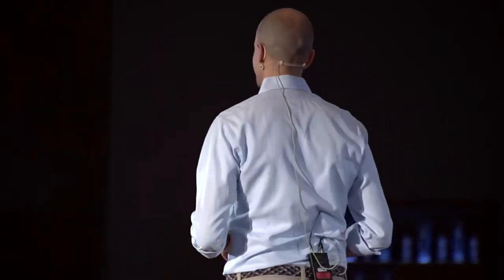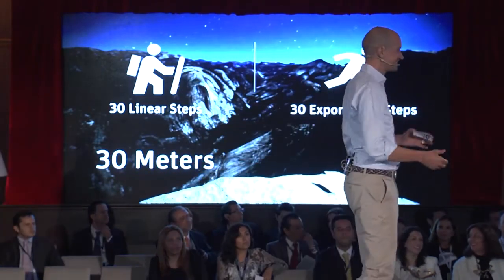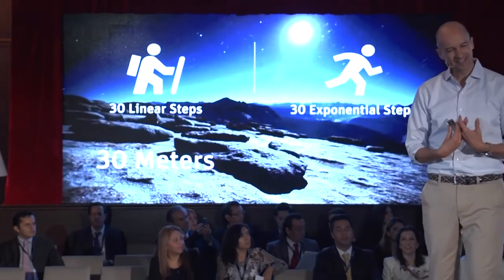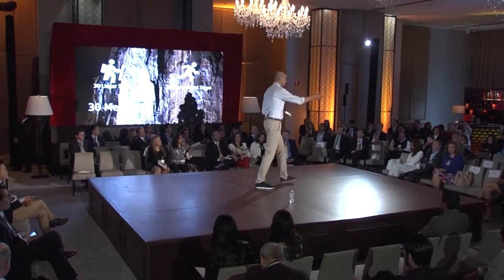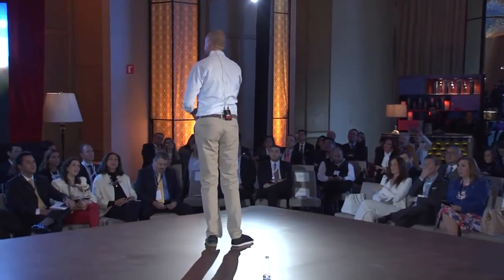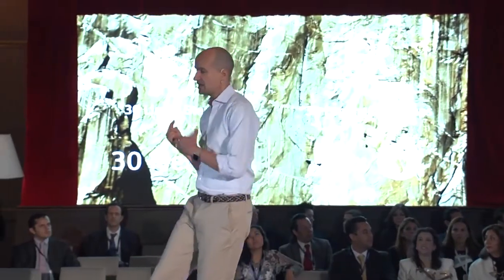How far do you get with 30 exponential steps? Typically the first answer I hear is a mile or one kilometer, then someone says 'to the moon.' Here's the truth: 30 exponential steps is one billion meters — 25 times around planet Earth, or to the moon, back from the moon, and halfway to the moon again. This demonstrates two things: first, it's really hard to intuitively understand exponential change; second, something that moves from a linear to an exponential trend skyrockets — from 30 meters to a billion meters.